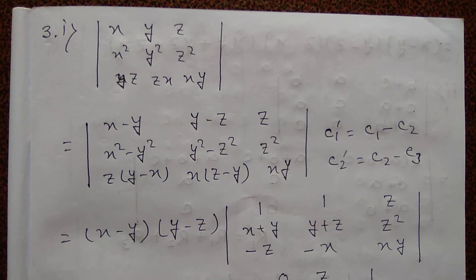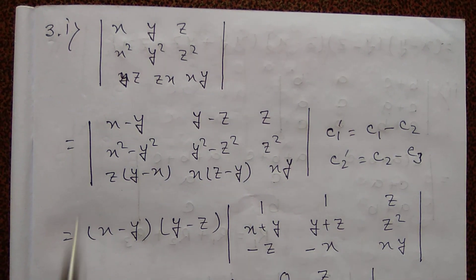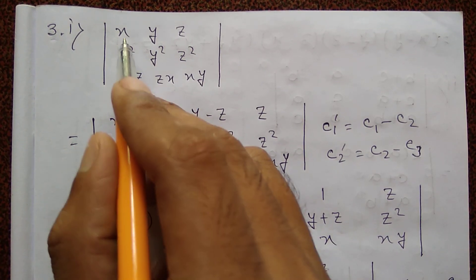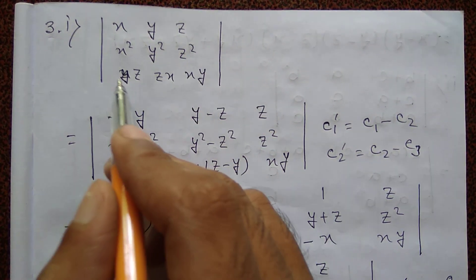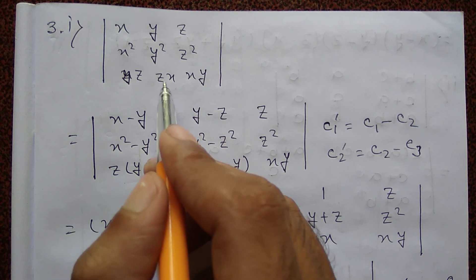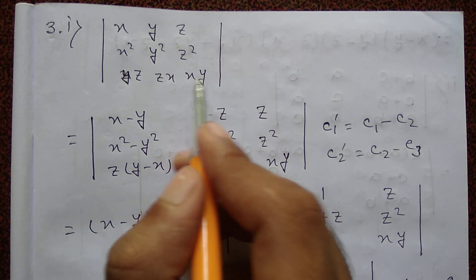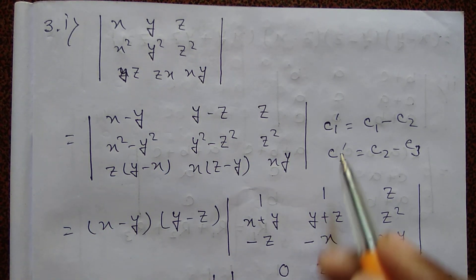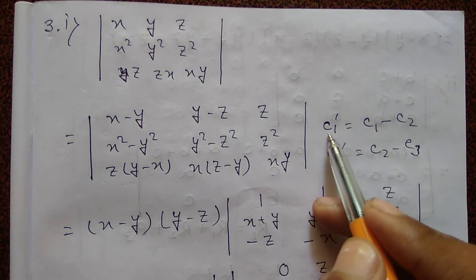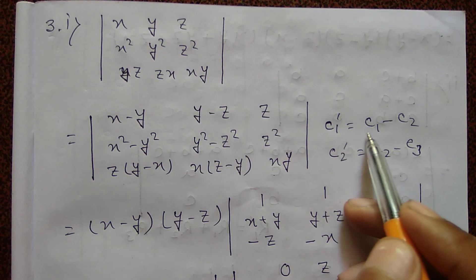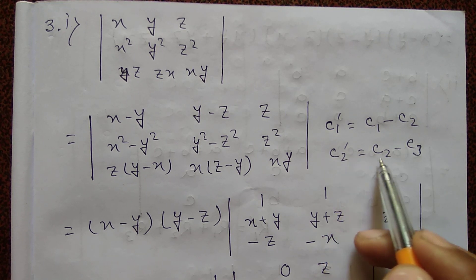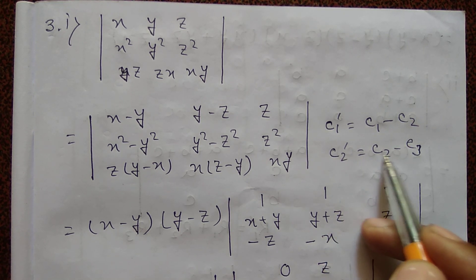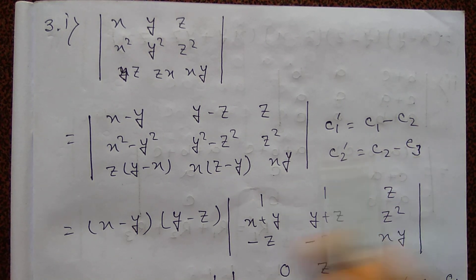Next problem: Determine the determinant of the matrix with rows: x, y, z; x squared, y squared, z squared; yz, zx, xy. First operation: C1 prime equal to C1 minus C2, C2 prime equal to C2 minus C3. After the operation, C1 and C2 give entries x minus y, x squared minus y squared, z into y minus x; and y minus z, y squared minus z squared, x into z minus y.